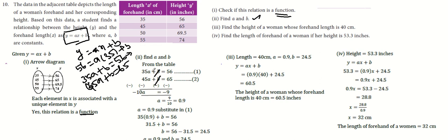35a plus b minus 45a plus b equals 56 minus 65. In the minus, it becomes minus 10a equals minus 9, so a equals 9 divided by 10, which is 0.9.